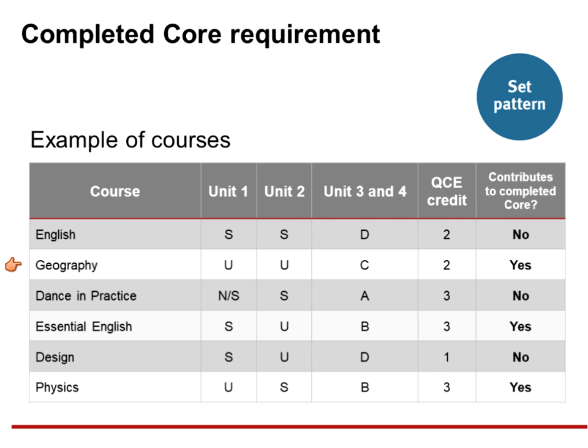Another student studies Geography for all four units. Their results for Unit 1 and Unit 2 are reported as unsatisfactory. In Year 12, they achieve a grade of C — the set standard — for the Unit 3 and 4 pair. Two QCE credits accrue and these are eligible to contribute to the completed core. The student would have accrued two of the 12 credits required from completed core courses. Consider Dance in Practice, where there is an NS for Unit 1, meaning Unit 1 was not studied. The student began Dance in Practice in Unit 2, studying three of the four units and meeting the set standard for Unit 2 and the Unit 3 and 4 pair. Three credits accrue to a QCE, but as the subject was not studied in full, those three credits will not contribute to the completed core requirement.